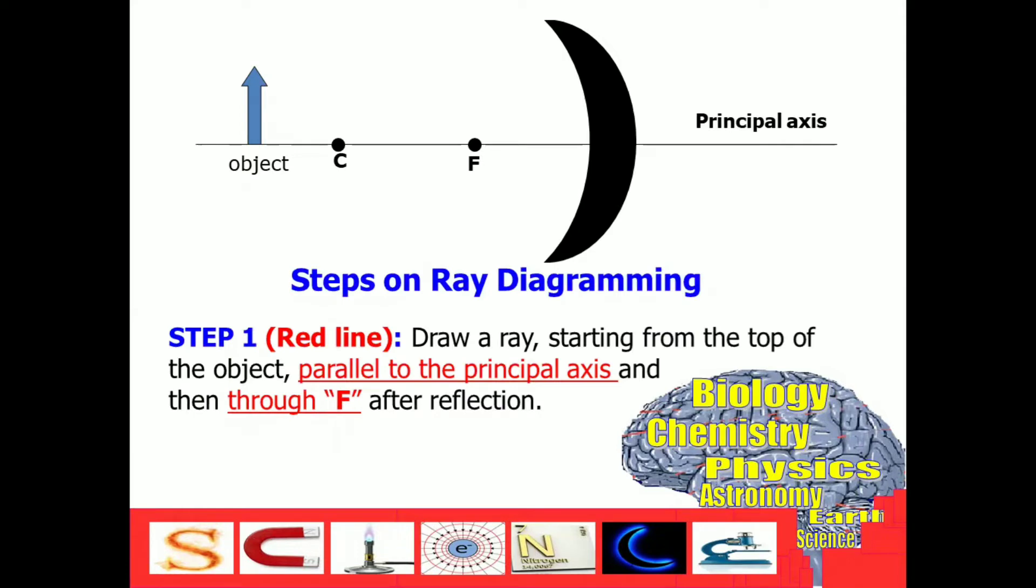Our first step is, draw a ray starting from the top of the object, parallel to the principal axis. And we can show that through this. And then, through F after reflection. So the ray passes the principal focus.